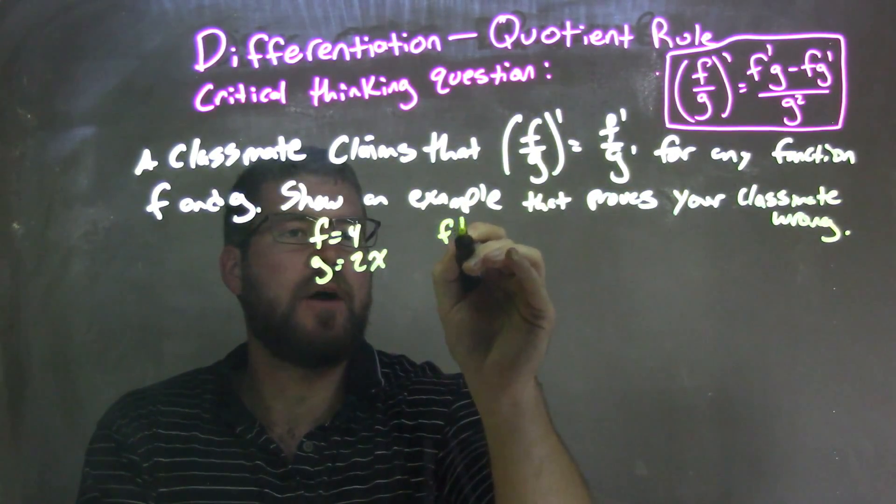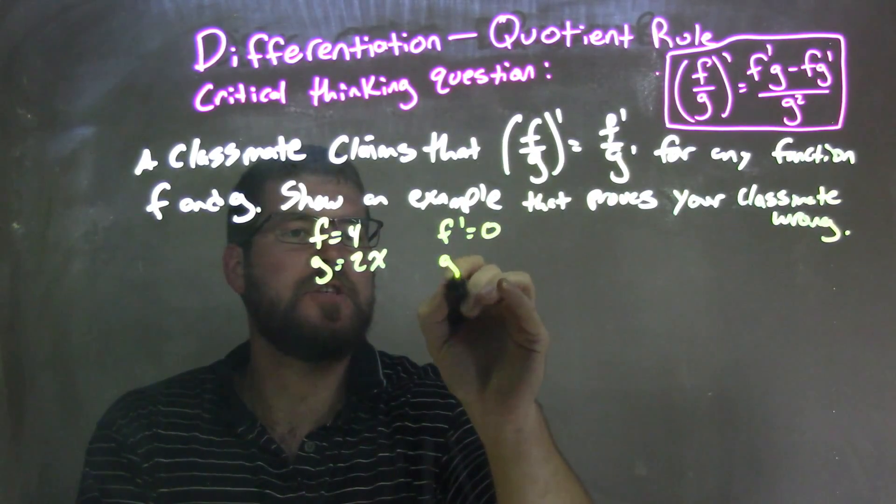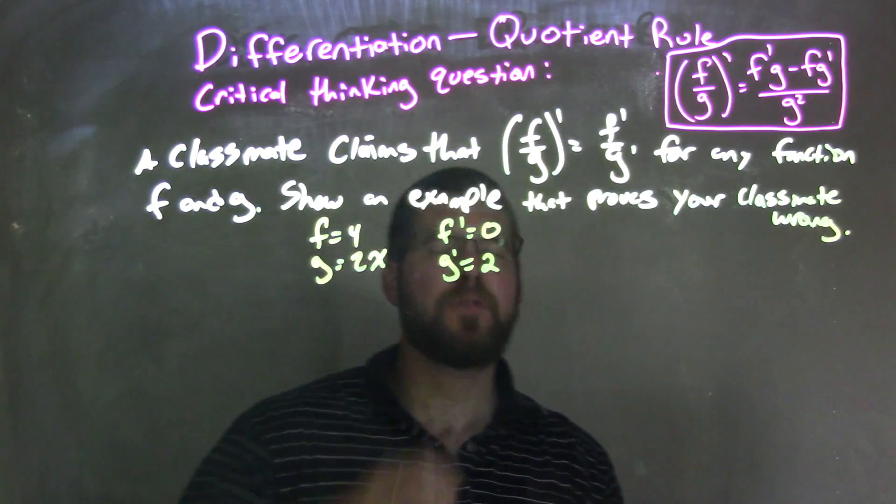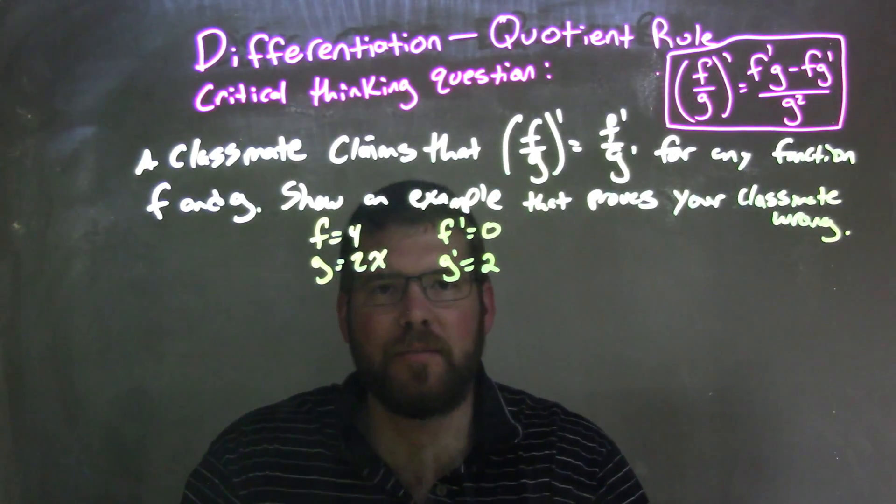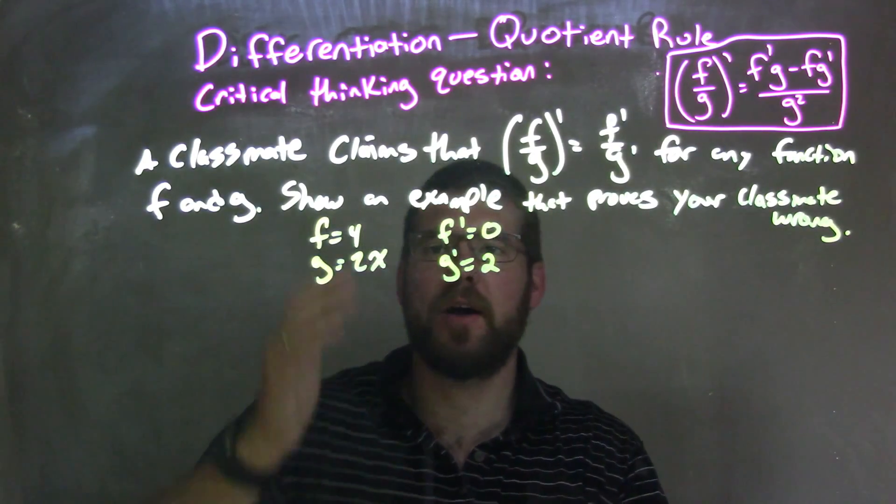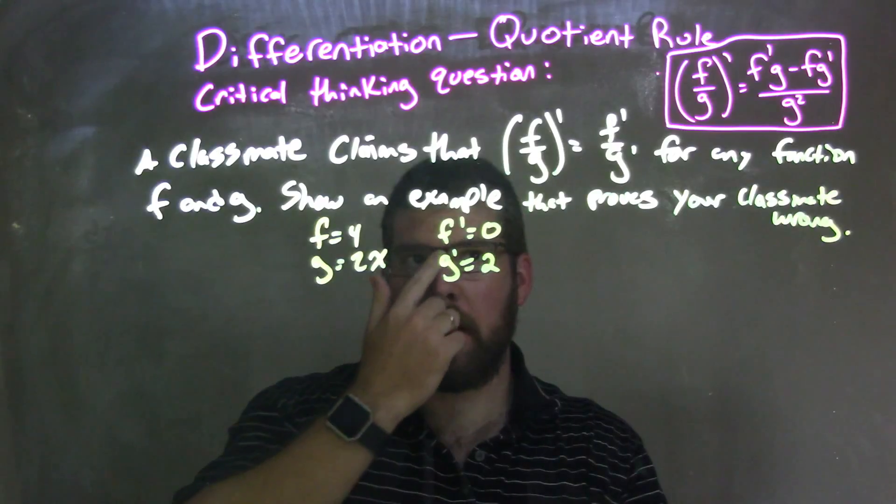If I find f prime is 0 and g prime is just 2. And sometimes it's easy to keep it simple. No sense in making a really hard problem here. We're going to find one simple way where this is wrong.